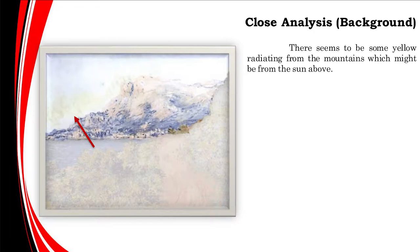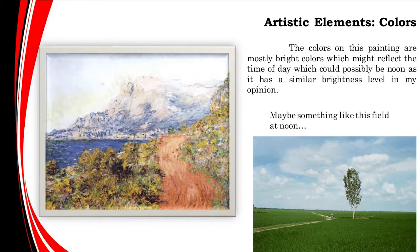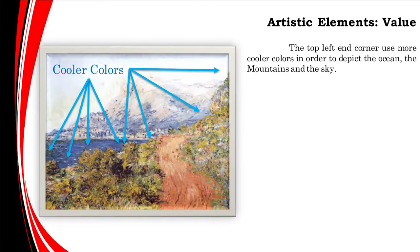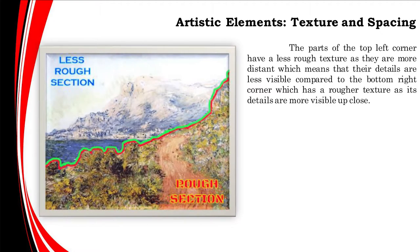There seems to be some yellow radiating from the mountains which might be from the sun above. Some notable artistic elements are the use of color. The colors in this painting are mostly bright colors which might reflect the time of day, possibly noon. The parts of the top left corner have a less rough texture as they are more distant, with cooler colors depicting the ocean, the mountains, and the sky.